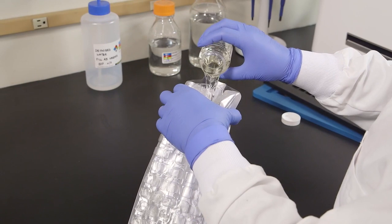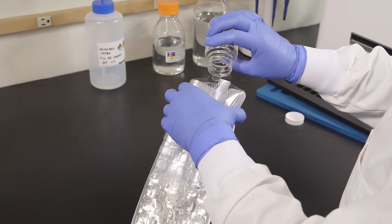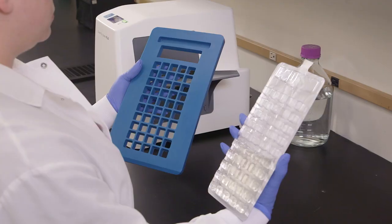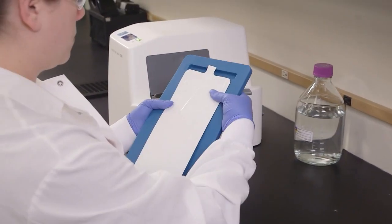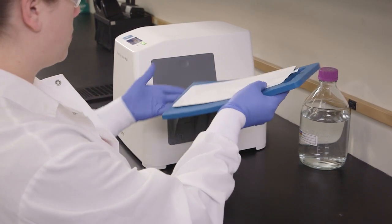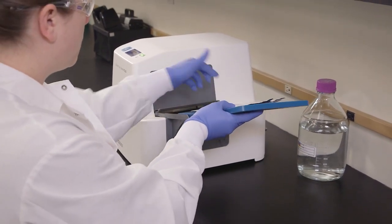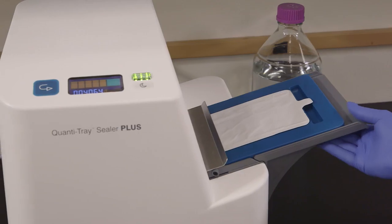Pour the sample mixture into the QuantiTray, avoiding contact with the foil tab. Place the filled QuantiTray on the rubber insert, making sure each well fits its corresponding hole. Push the insert with tray into the sealer until the sealer grabs the tray and pulls it into the slot.